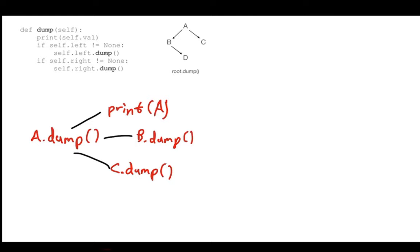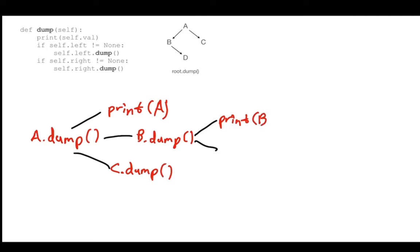Now what does b.dump() do? Tracing through: it prints B. B doesn't have a left child, so that condition is false. B does have a right child, so we call right.dump(), which is d.dump(). So b.dump() produces: print B, then call d.dump().